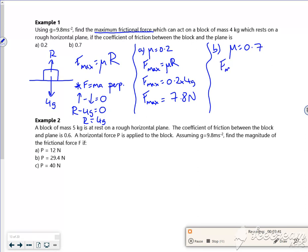So F max is mu R. So F max is the coefficient of viscosity, the frictional coefficient, times by the R value, which we said was 4G.